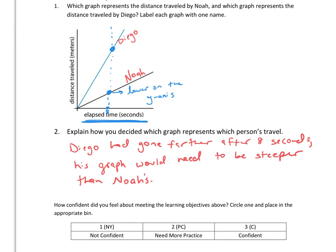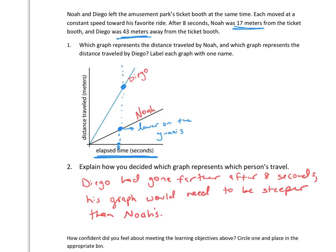Notice that Noah's is going to be lower, so that means he would have the less steep graph.